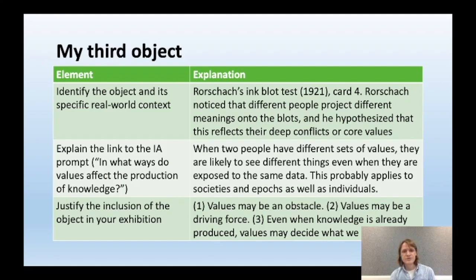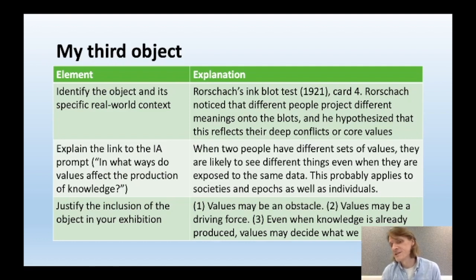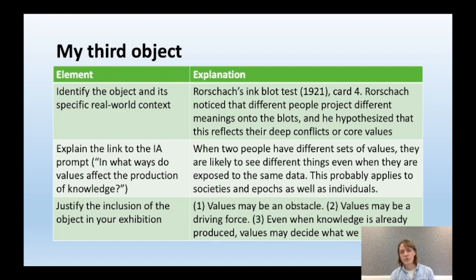How am I going to explain the link to the prompt? When two people have different sets of values, they are likely to see different things even when exposed to the same data. This probably applies not only to separate individuals but also to societies, time periods, or paradigms. How am I going to justify the inclusion of this object? It adds nicely to the two points I made with my previous objects. With the third object I seem to be saying that even when knowledge is already produced, values may decide what we make of it.